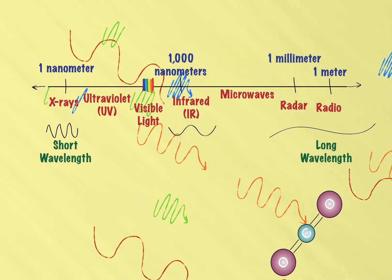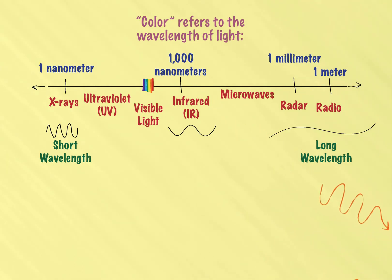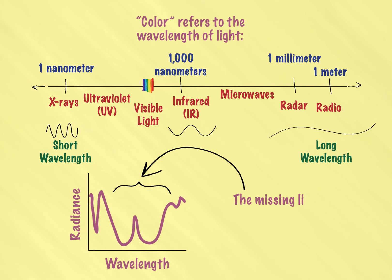CO2, like other gases, absorbs only certain colors of light. OCO-2 is tuned to look at these specific colors. And by measuring the amount of light that's missing in each one, we can figure out how many CO2 molecules got in the way.